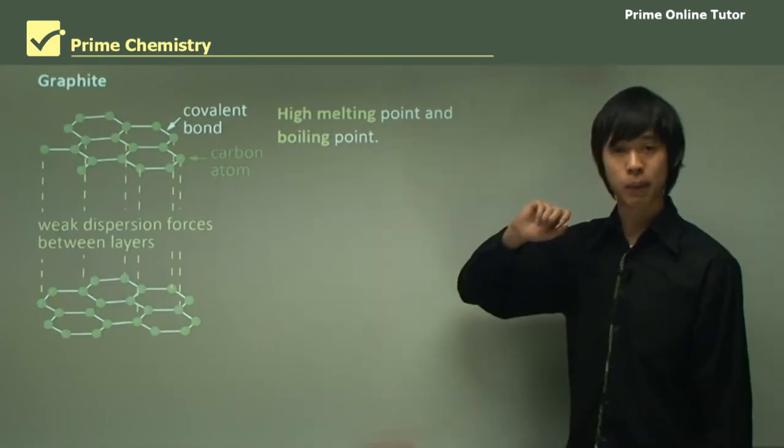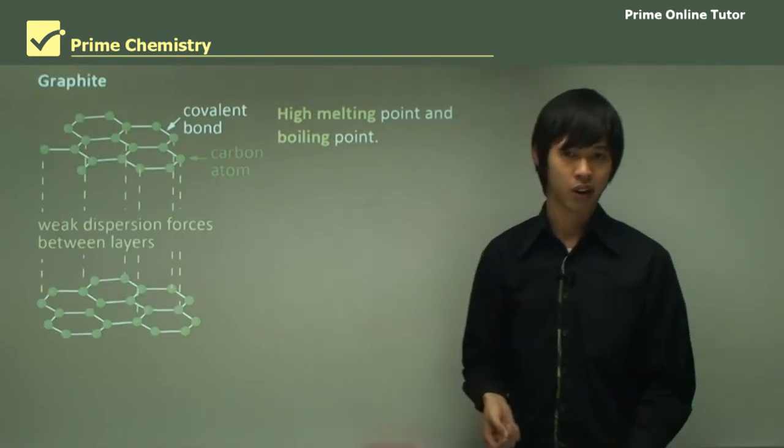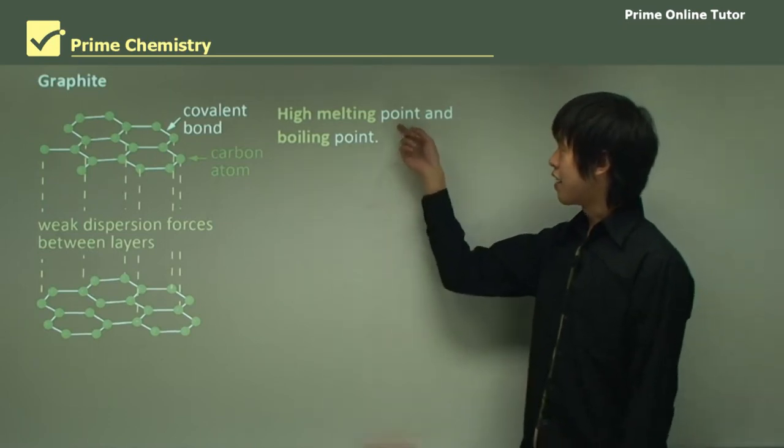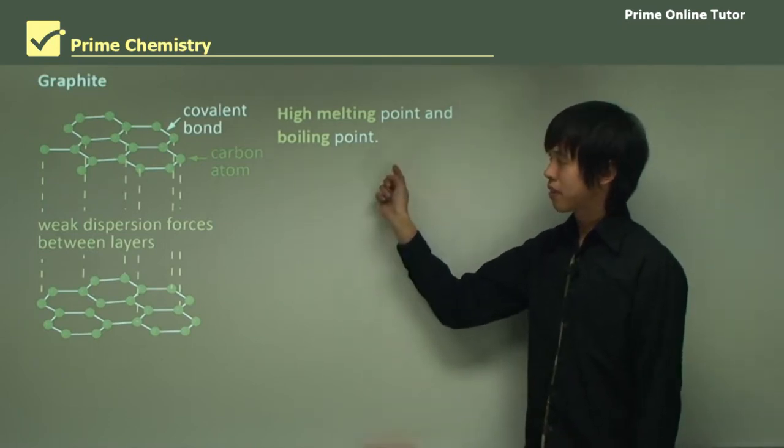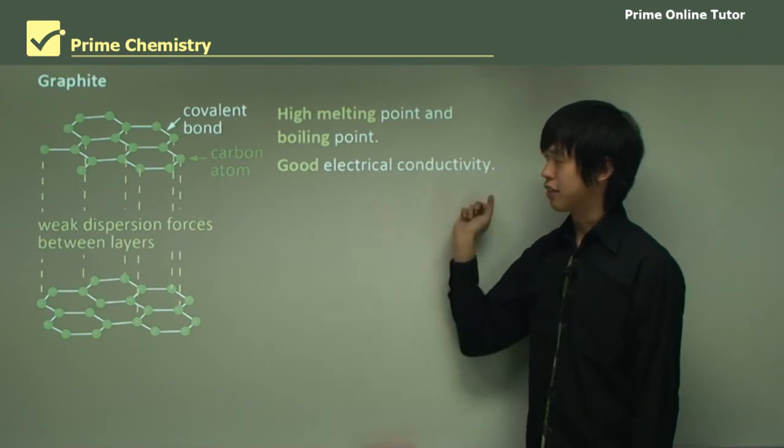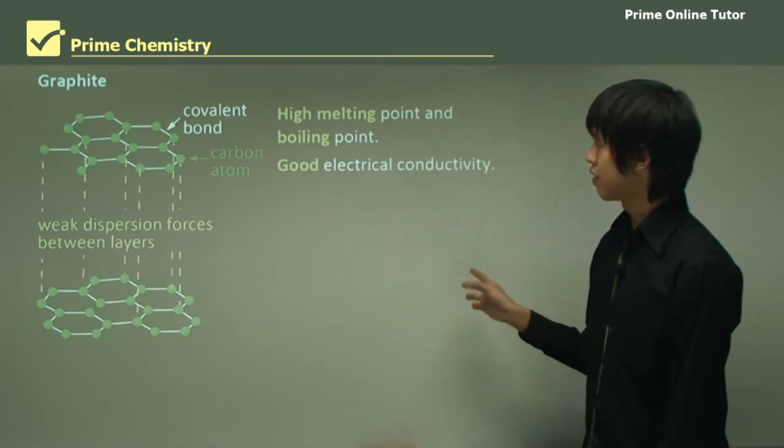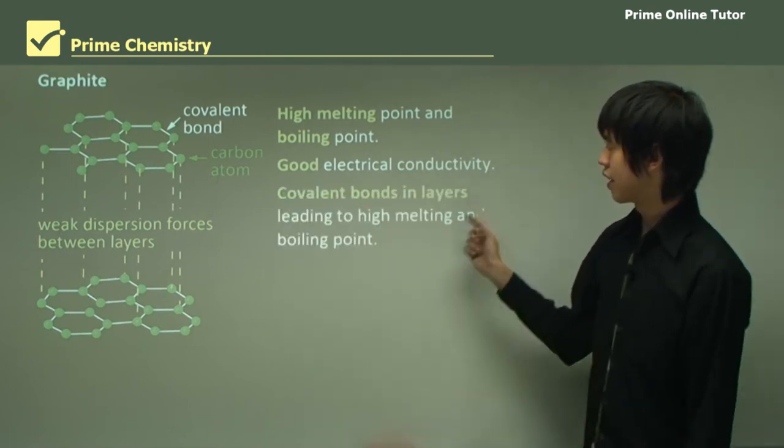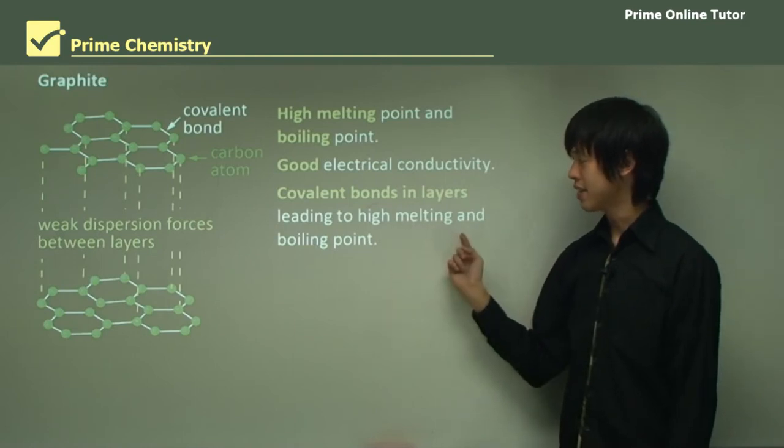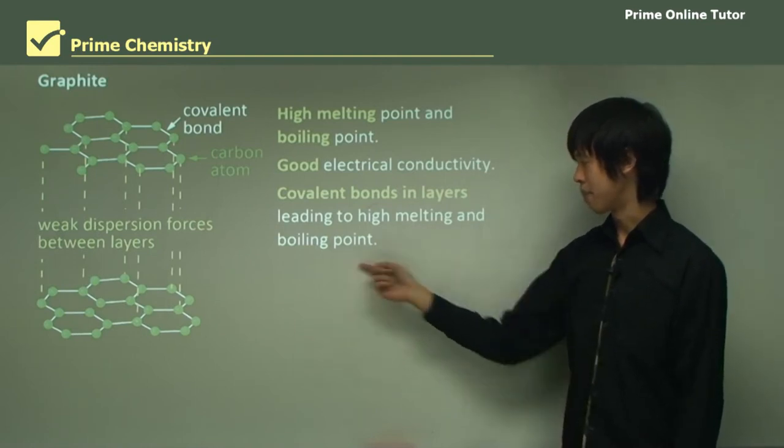Graphite, the stuff we see in pencils that we write with, has a very high melting and boiling point and good electrical conductivity. The reason for that is because it covalently bonds in layers, leading to high melting and boiling points.